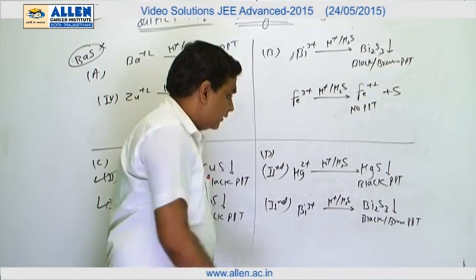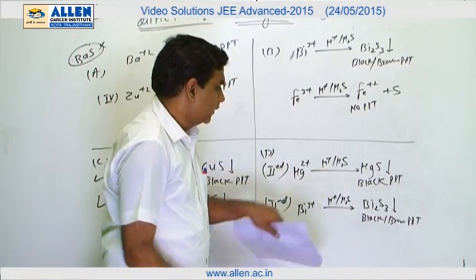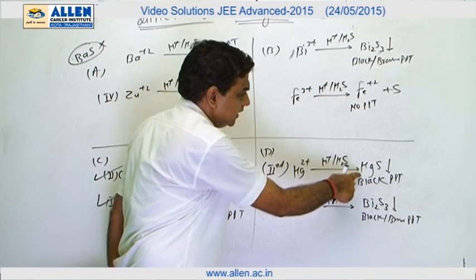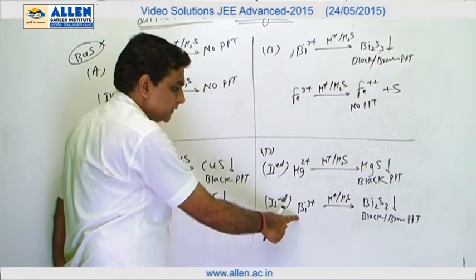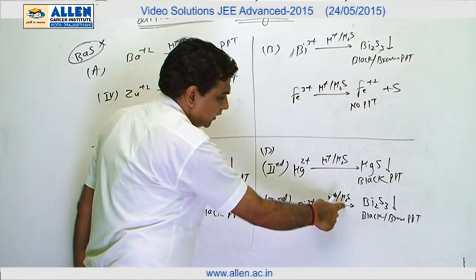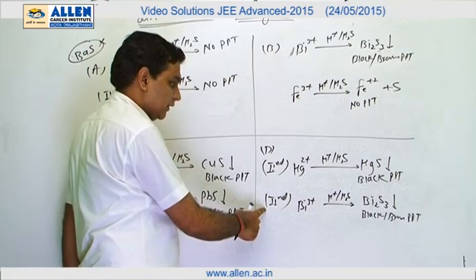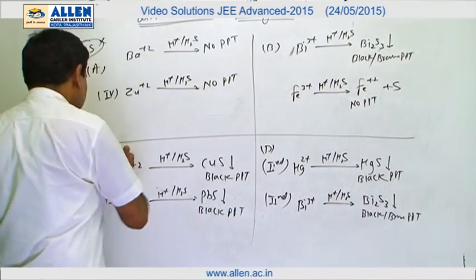In option D, mercury plus 2 also belongs to second group when reacting with acidic medium H2S. It produces HgS black precipitate. Bismuth plus 3 in acidic medium with H2S produces black brown precipitate because both ions belong to second group in salt analysis. Answer is C and D.